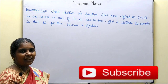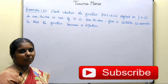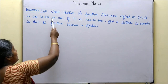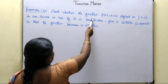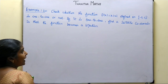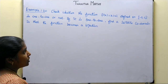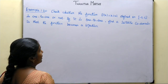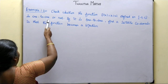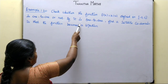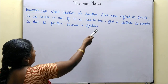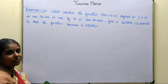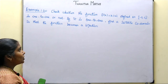Welcome students. I am going to talk about Example 1.20. Check whether the function f of x equal to x into modulus of x, defined on minus 2 to 2, is one-to-one or not. If it is one-to-one, find a suitable codomain so that the function becomes a bijection.